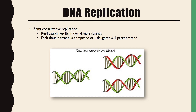DNA replication is semi-conservative, meaning it results in two double-stranded DNAs, each containing one parent (old) strand and one daughter (new) strand. In the image, the green strand represents the parent strand and the red strand is the daughter strand.